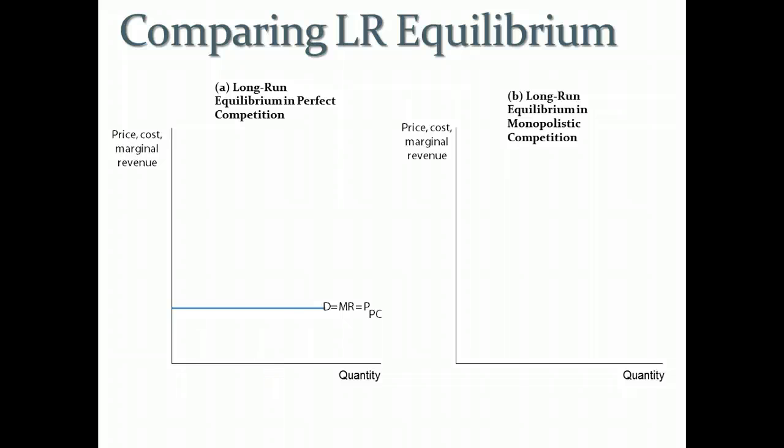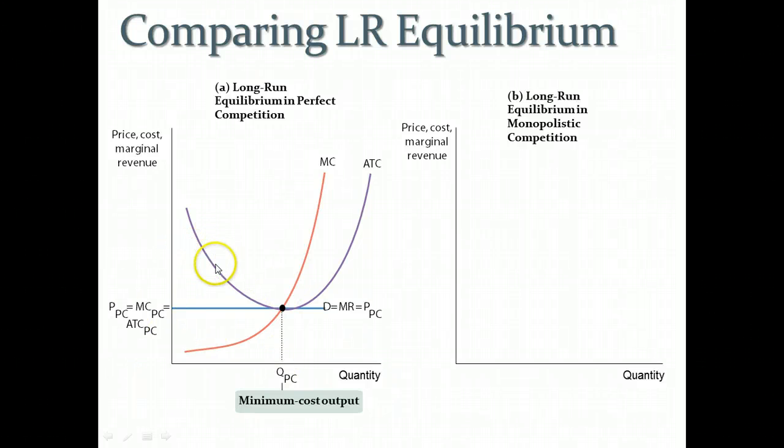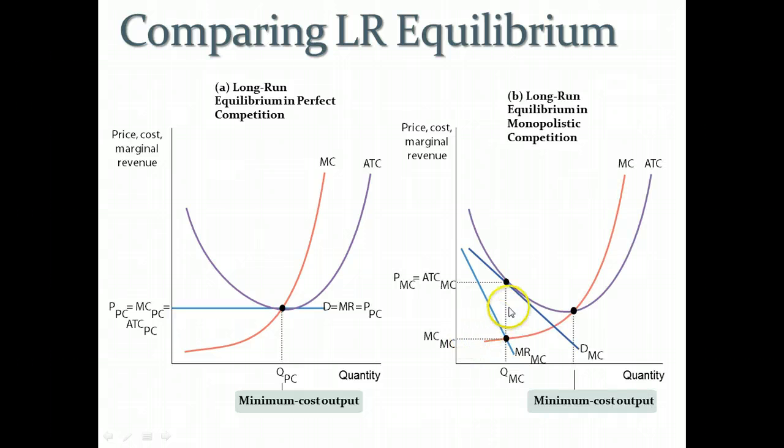Graphically, we could kind of compare the long run equilibriums of perfect competition with that of monopolistic competition by looking at side-by-side graphs. On the left, we've got long run equilibrium and perfect competition where demand is horizontal. It's equal to marginal revenue. It will be tangent to the average total cost curve at its minimum point, which is where marginal cost crosses through it. So our profit maximizing level of output would be at QPC. With monopolistic competition, we have downward sloping demand curve and downward sloping marginal revenue curve. And so, with the same average total cost curve, we find that a monopolistically competitive firm will produce at QMC and at the higher price, price MC.